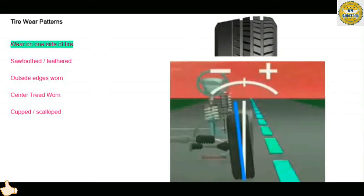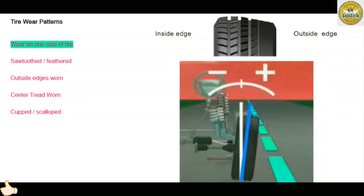If one edge of the tire is severely worn and the rest of the tread is relatively even, it could be a sign of excessive camber. If the camber adjustment is too positive, the tread wear occurs on the outside edge. Too much negative camber causes tread wear on the inside edge.